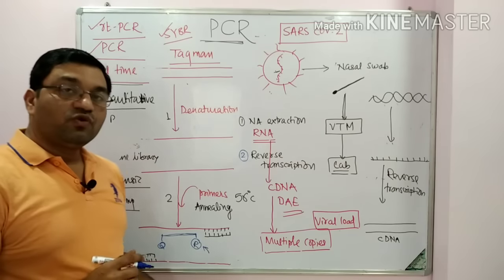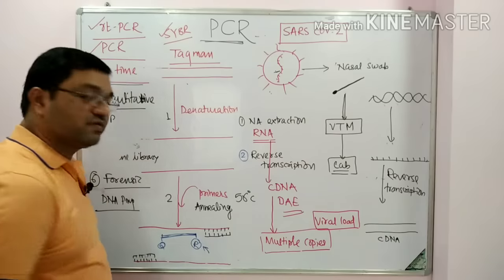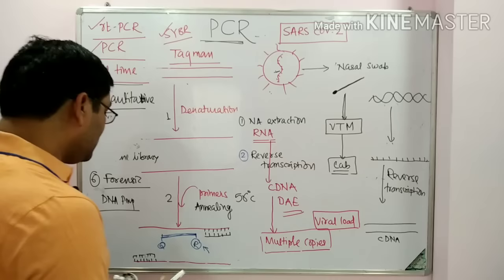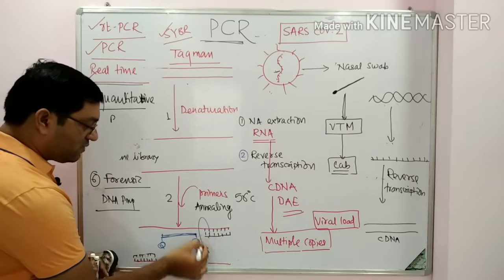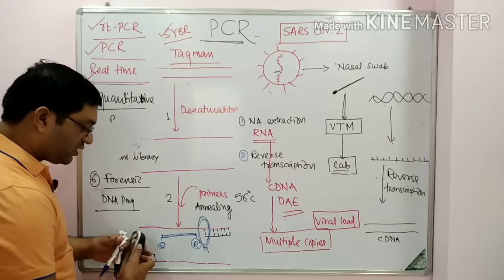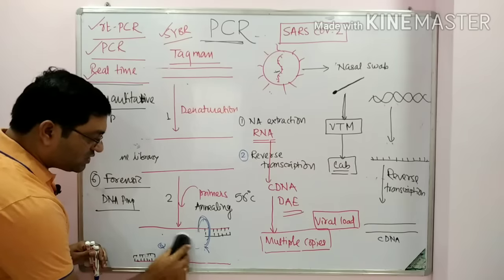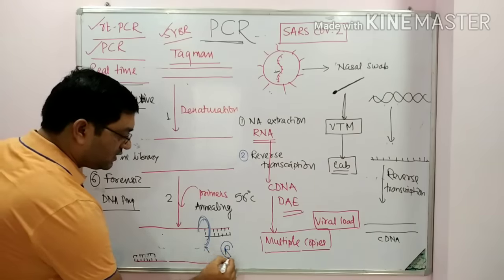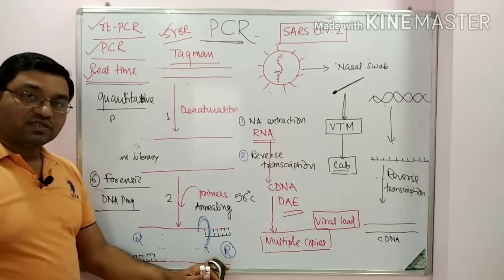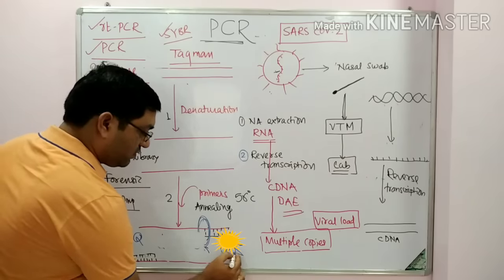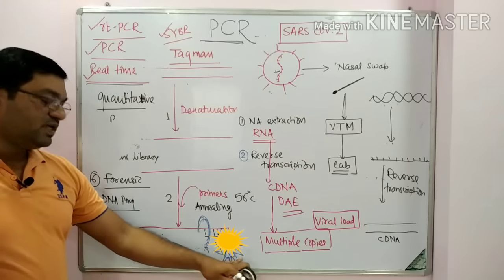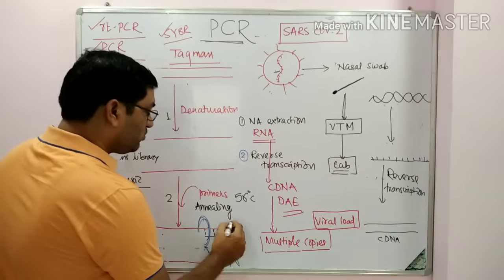When the reporter dye and quencher are in close proximity, the reporter dye does not emit fluorescence. When they are separated — not in close proximity — the dye will emit fluorescence. During DNA synthesis, when extension occurs, the polymerase causes extension and also has exonuclease activity. With this exonuclease activity, the polymerase removes these nucleotides one by one, separating the reporter dye from the quencher. Now the fluorescence is emitted by the reporter dye, which is detected by a fluorometer.